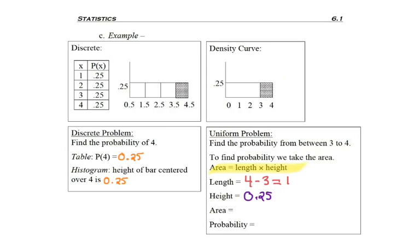Finding area by multiplying length and height. So 1 for length, 0.25 for height, multiplies to 0.25. And I've just found that the probability of being between 3 and 4 on the curve is 0.25.